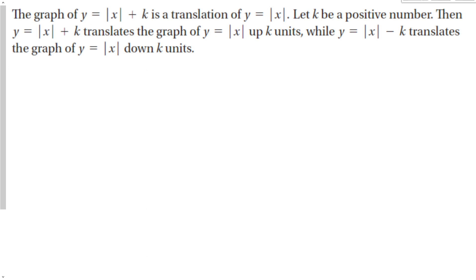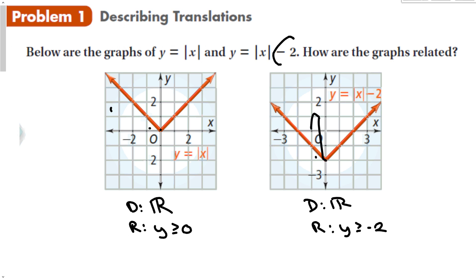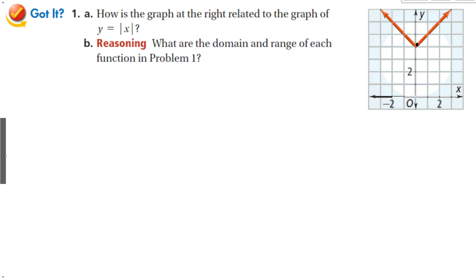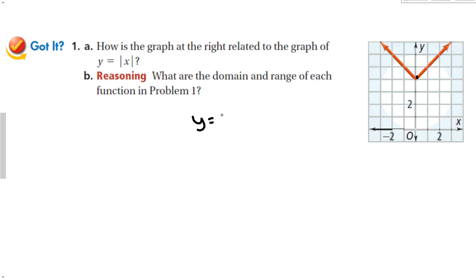The graph of the absolute value of x plus k is a translation of the absolute value of x. Let k be a positive number: the absolute value of x plus k translates the graph up k units, while the absolute value of x minus k translates the graph down k units. So that negative 2 shifted the graph down, and the formula for the shifted-up-4 graph would be y equals the absolute value of x plus 4.